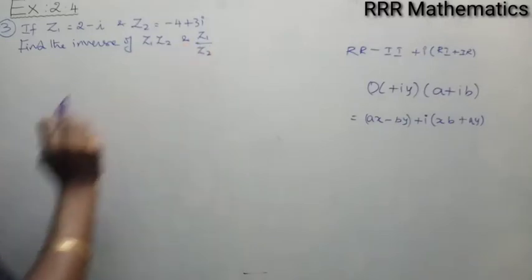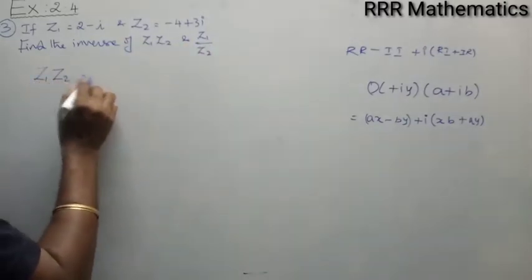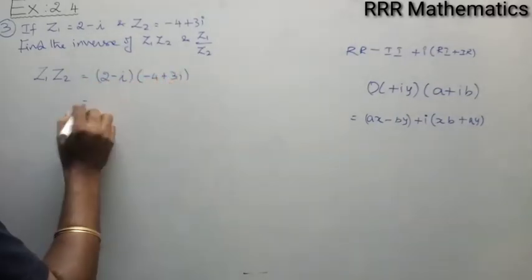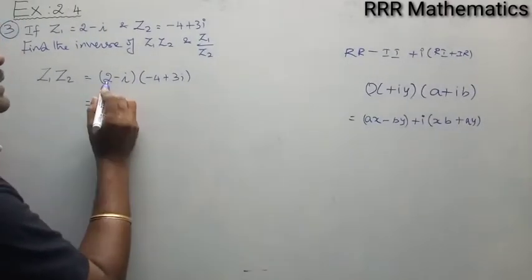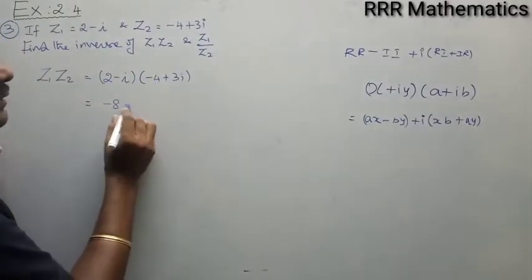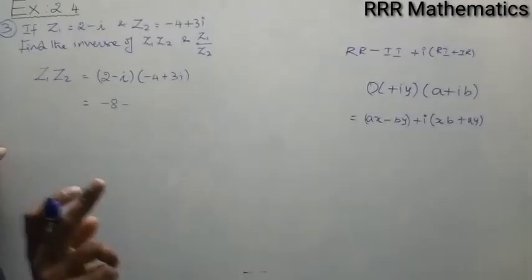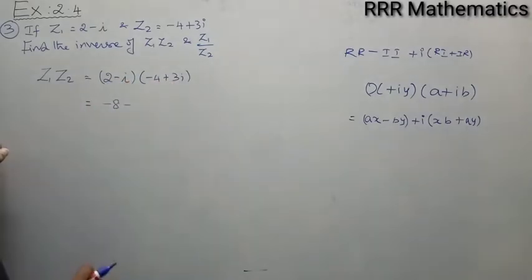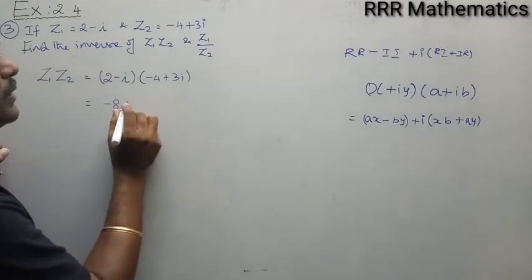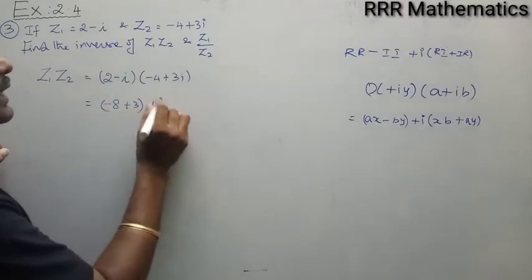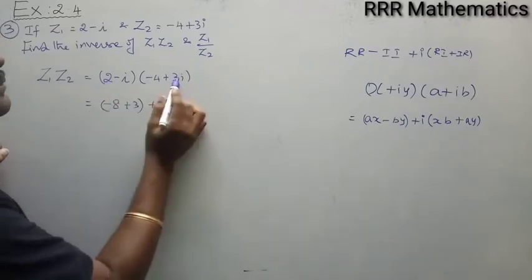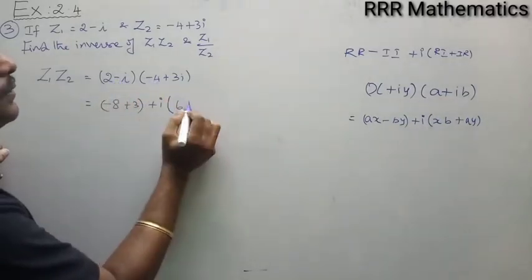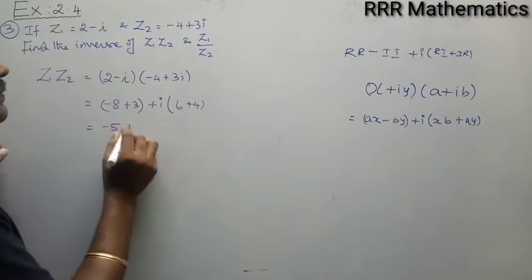Now find out the product z1·z2: (2 minus i) into (minus 4 plus 3i). I will use the same rule. Real into real: 2 into minus 4 equals minus 8. Minus imaginary part into imaginary part: minus 1 into 3 equals minus 3. We already have a minus sign, so it will be plus 3. Plus i times real into imaginary: 2 into 3 equals 6. Imaginary into real: minus 1 into minus 4 equals plus 4. So the result is minus 5 plus 10i.